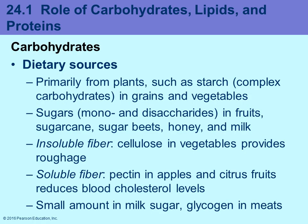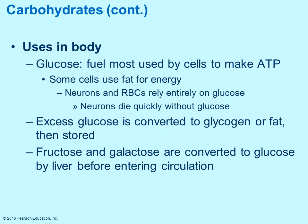Looking at macronutrients first, starting with carbohydrates — most of your carbohydrates are coming from plants. One example is starch. Carbohydrates are your sugars and can be in different forms: fiber, insoluble such as cellulose, or soluble such as what you often find in some fruits. They're also found in vegetables, salmon, meat, and dairy products.